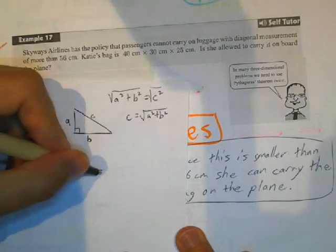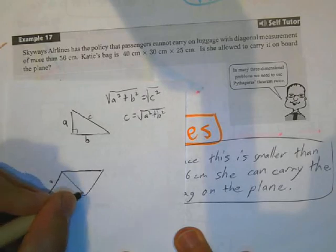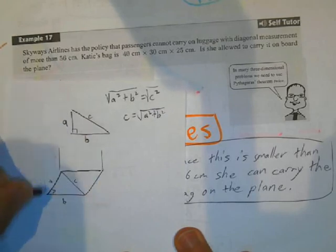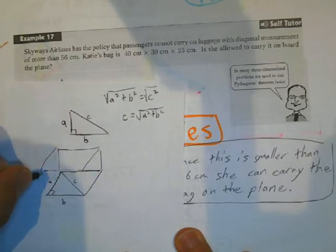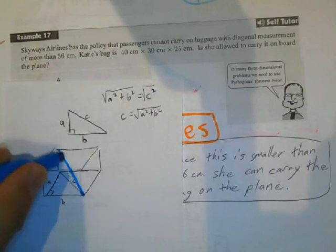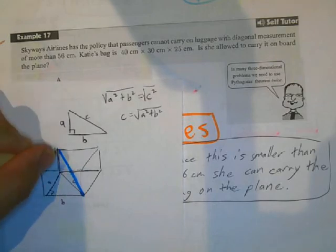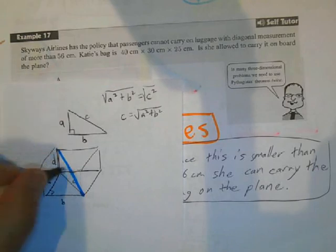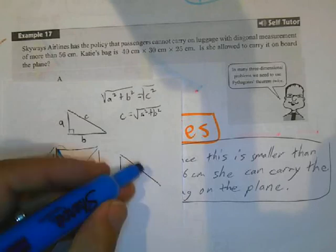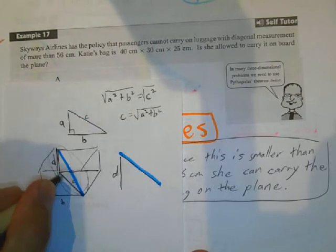Now I'm going to draw this in a three-dimensional shape where the length here is A, the length here is B, the length here is C, and I'm drawing a three-dimensional box. And now I want to go from this point here to this point here. And let's call this height here D.